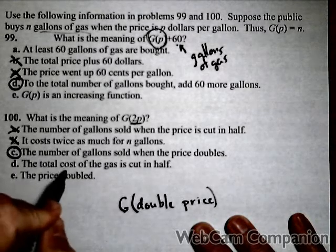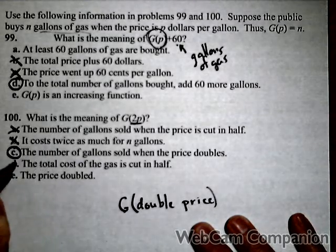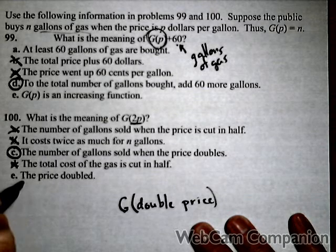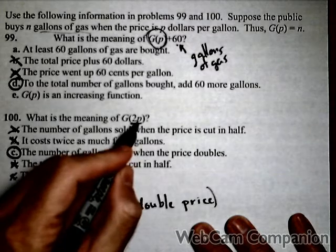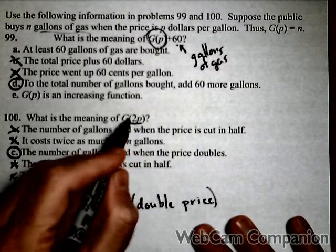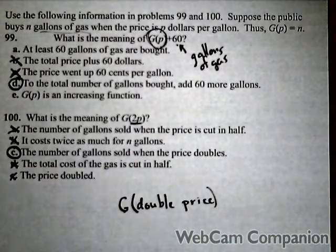Remember, the output is not total cost. It's gallons of gas. And again, it's not just the price is doubled. It's the number of gallons sold when the price is doubled. Because the 2p is being put into G, so our output is gallons of gas.